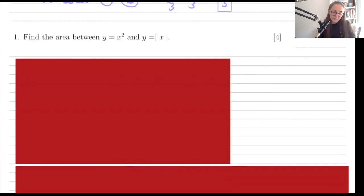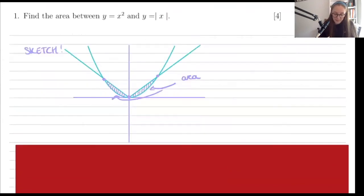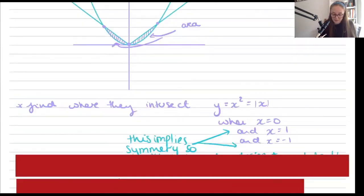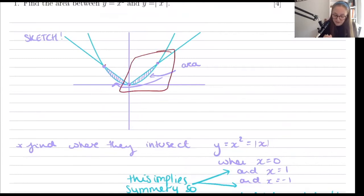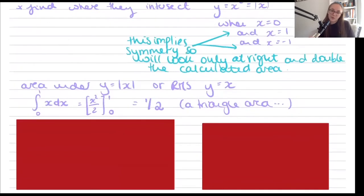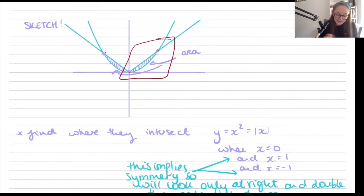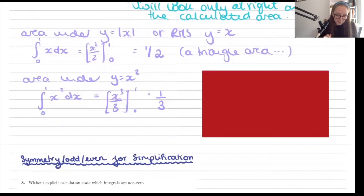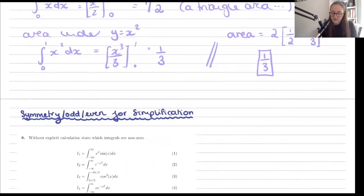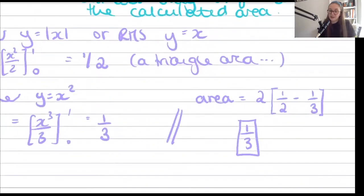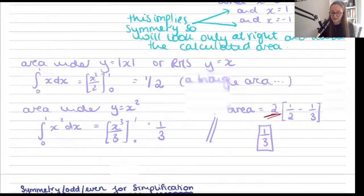The next question gives one curve and one line, and asks for the area between them. After sketching and finding intersection points at 0, 1, and −1, we notice symmetry. We only need to look at the right-hand side and multiply by 2. The area under y = x is a triangle with area 1/2; the area under y = x² from 0 to 1 is 1/3. Taking the difference and multiplying by 2 gives a total area of 1/3.